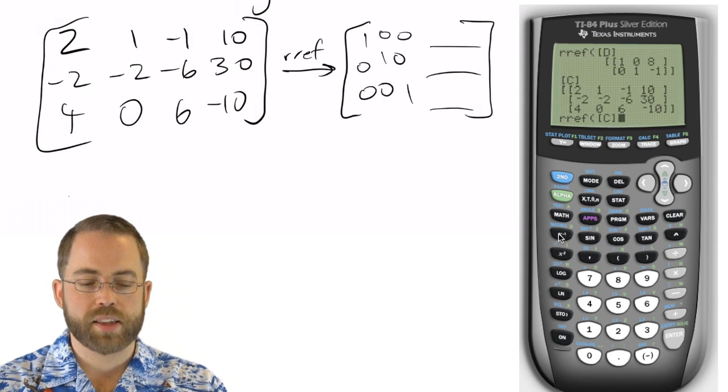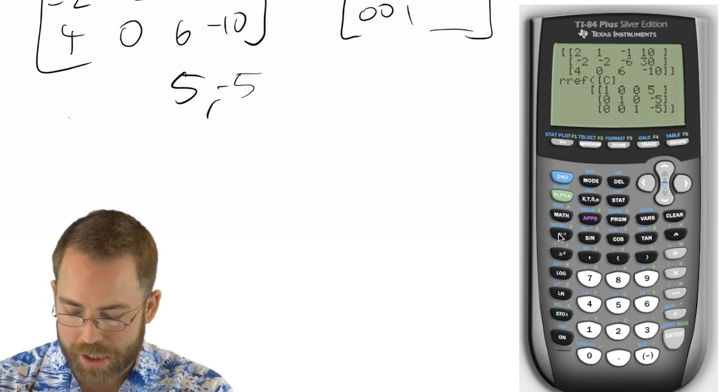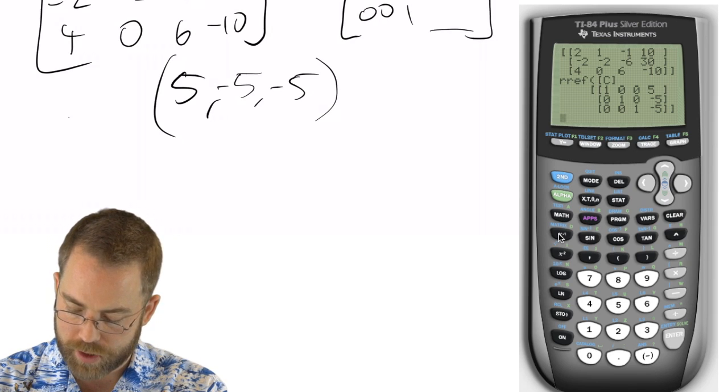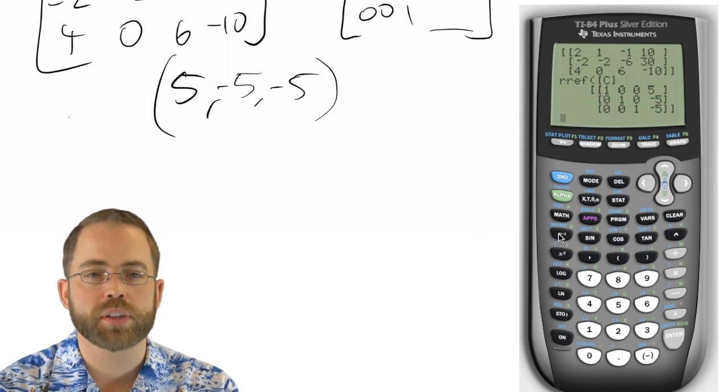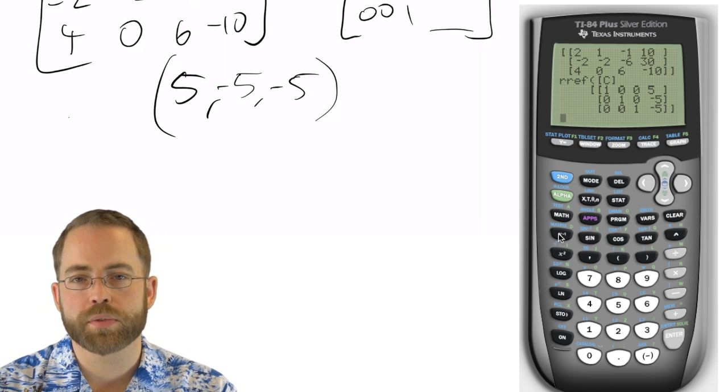then we can see that the answer to this systems of equations, bam, is 5, 5, negative 5. That that x and y and z coordinate will get us what we want out of this whole system of equations.